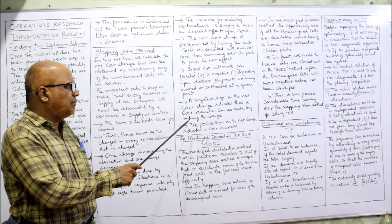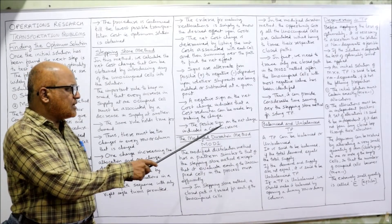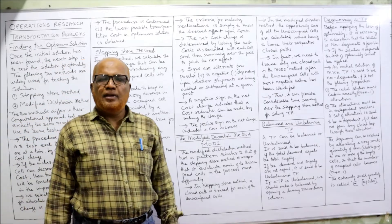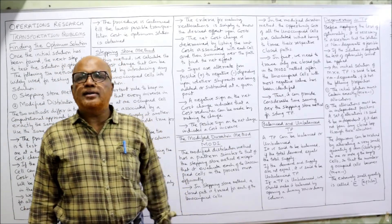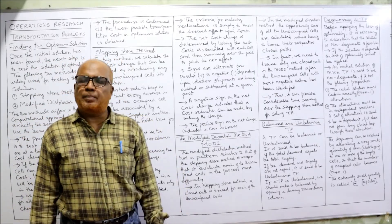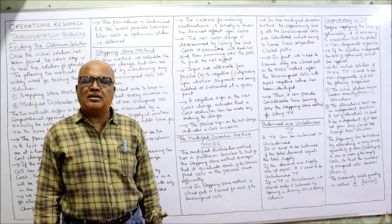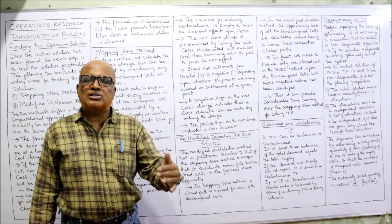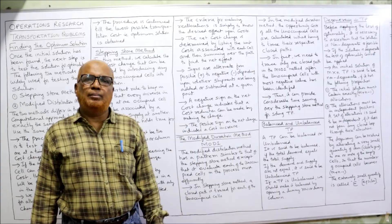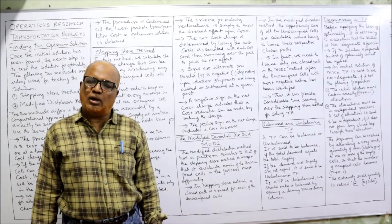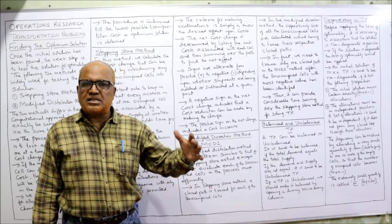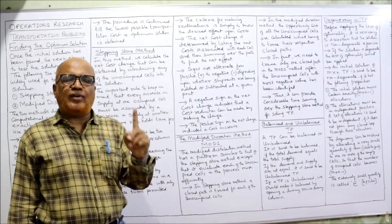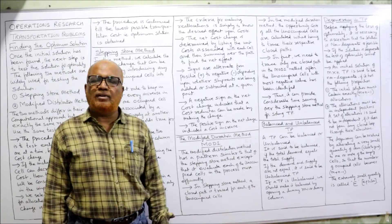A negative sign on the net cost change indicates that a cost reduction can be made by making the change. A positive sign means the cost increases. These are the key points regarding the Stepping Stone method. By doing problems on stepping stone, the concept will become more clear. From the next video onwards we will start the problems.